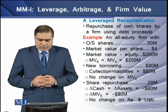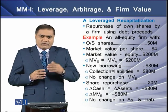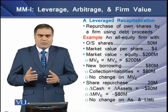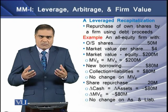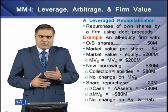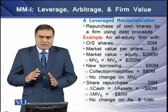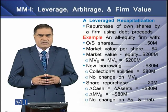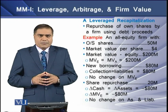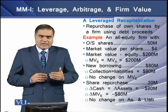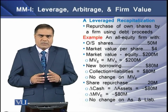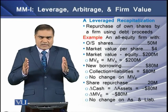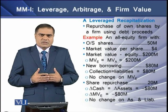Now assume the firm is planning to borrow $80 million. On the asset side, there is a collection of $80 million in cash, but on the liability side, there is an occurrence of a liability by the same amount. This means there is no change in the market value of equity of the firm. When the firm then goes for a share repurchase — buying back 20 million of its shares with the $80 million cash proceeds — there is a decrease in the asset side by $80 million and a corresponding decrease in the market value of equity by $80 million, but no change in the liabilities. So at the end, there is no change in the overall balance sheet structure of the firm.